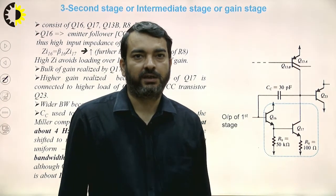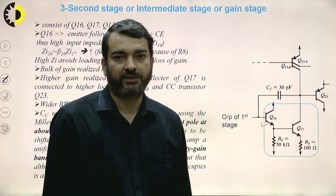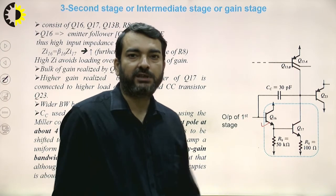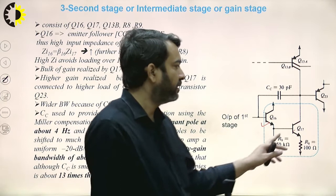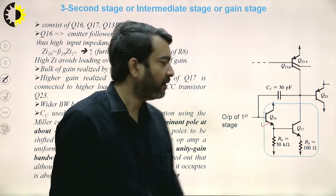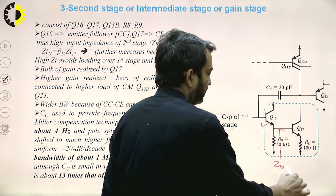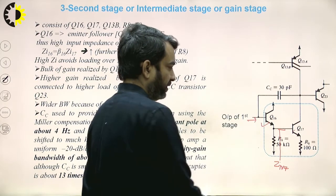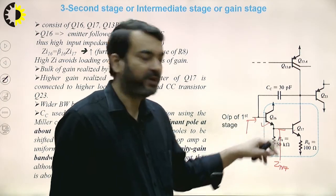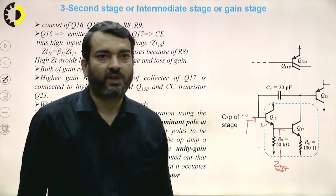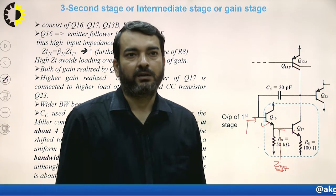Coming to the second stage or gain stage: transistor Q16 is in common collector configuration, which provides high input impedance to avoid loading. Transistor Q17 works in common emitter mode and provides the bulk of the gain of the 741. By connecting Q16 in front of Q17, if the input impedance of Q17 is Z_I17, the modified input impedance looking into the gain stage is approximately beta of Q16 multiplied by Z_I17, further increasing impedance and minimizing loading.